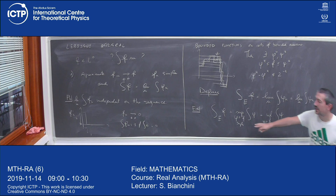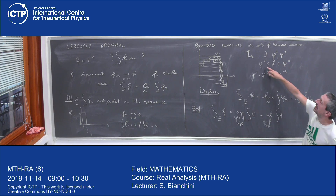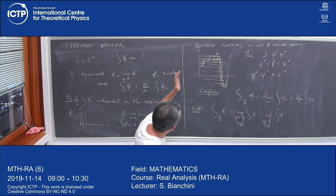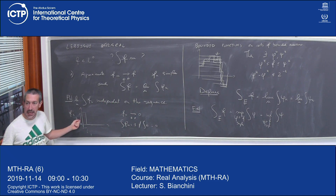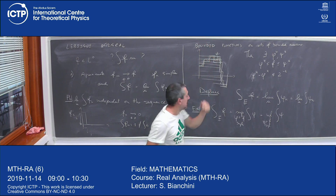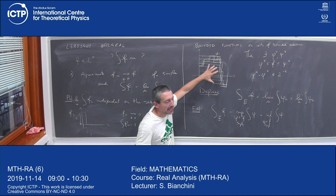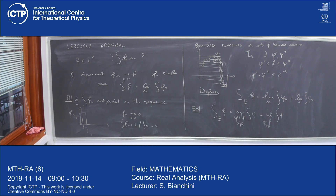This definition works because: first, you rule out the problem of unbounded approximations; second, you rule out the plus-infinity minus-infinity problem since F is bounded on a bounded measure set. The supremum equals the infimum up to epsilon times the measure of E. Now let's prove properties. The two problems observed are: the limit must be independent of sequence, and the sequence must be the right one.